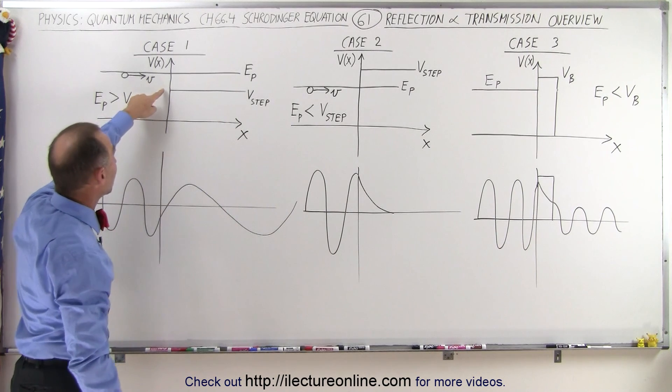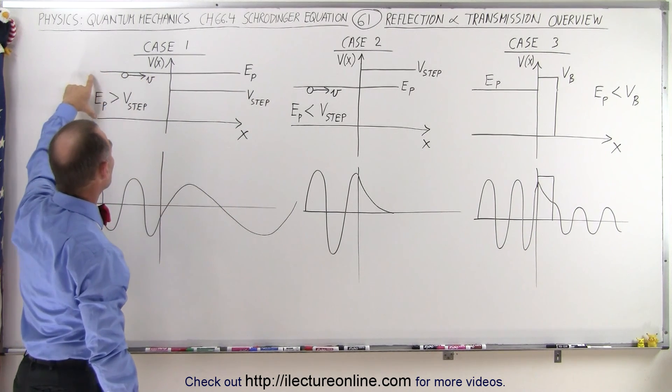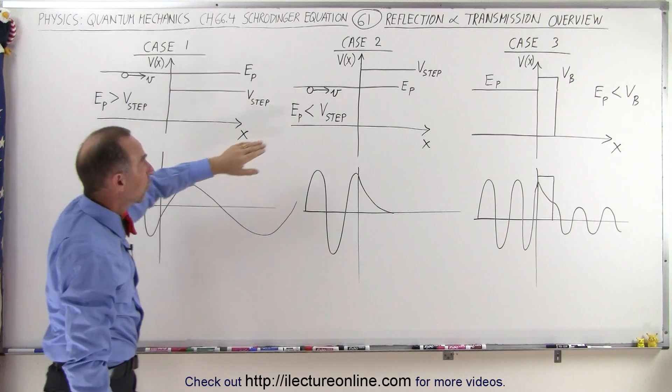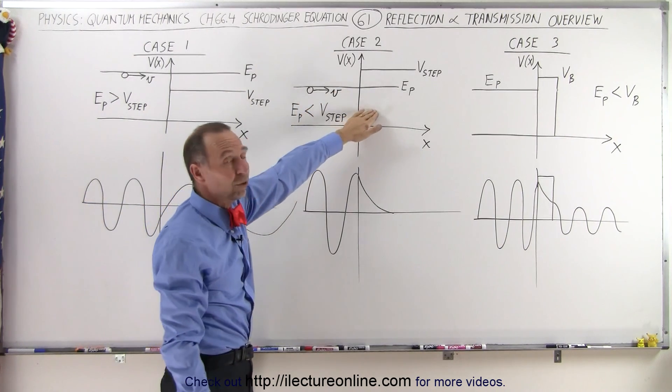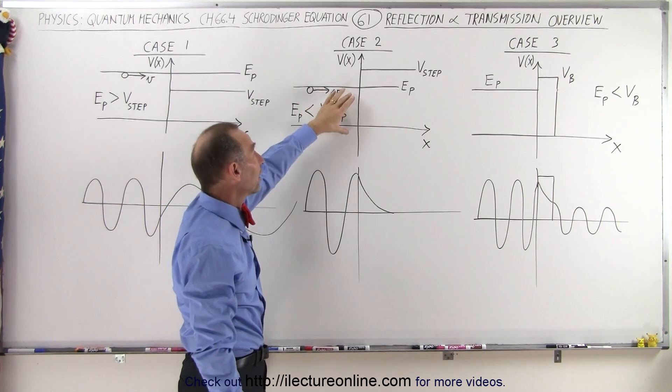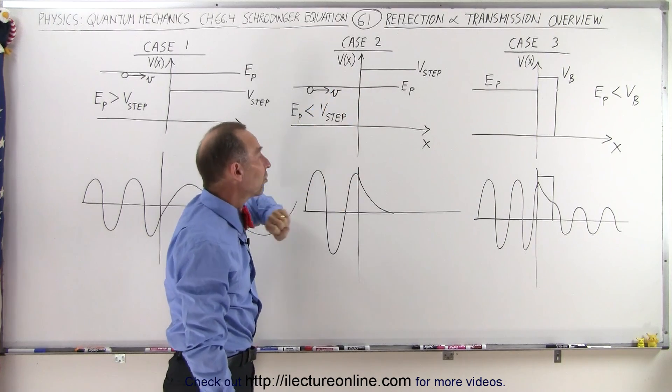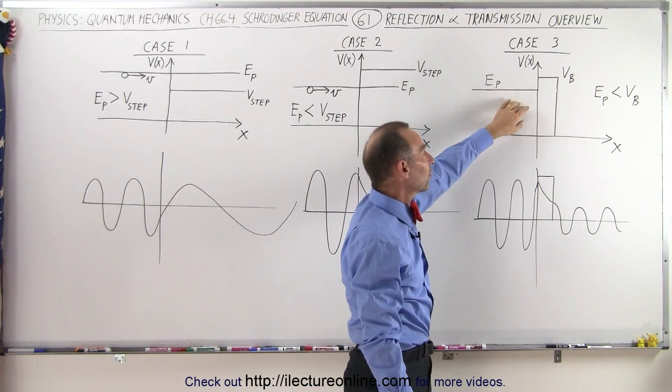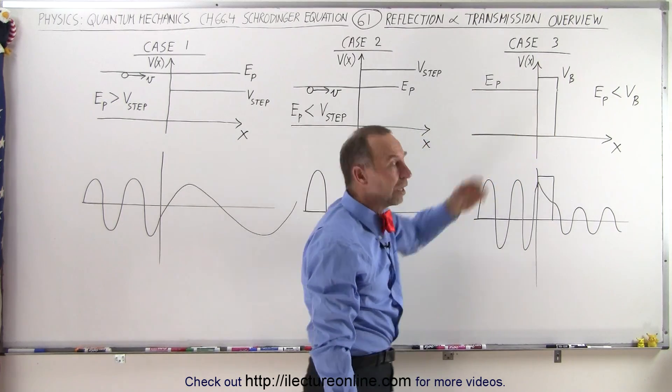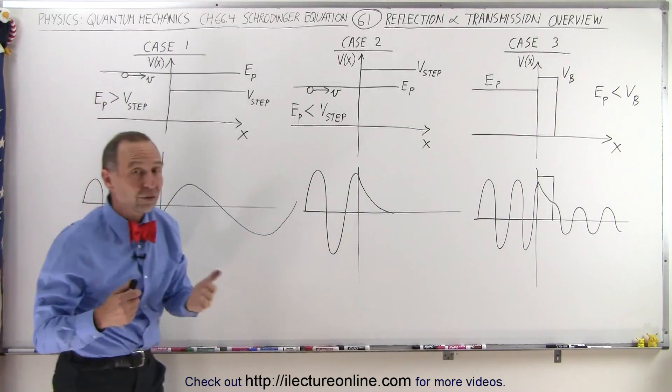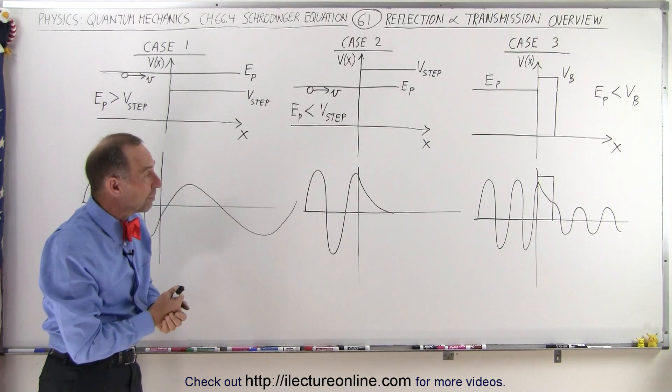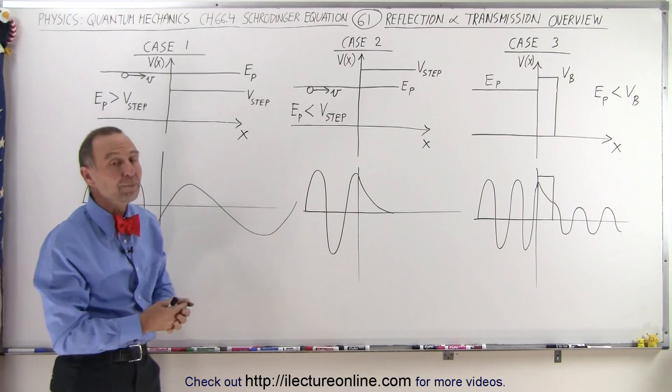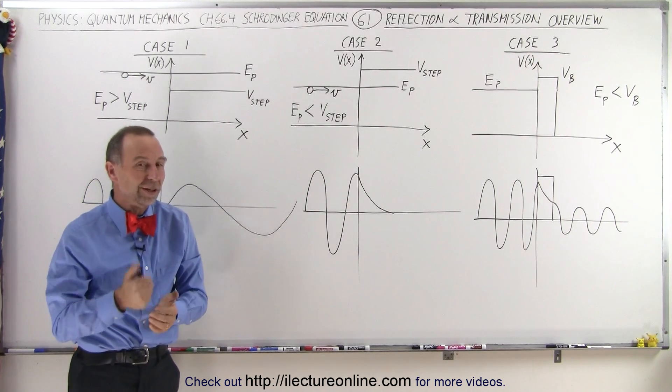Sure enough, there will be some reflection here, even though the energy of the particle is greater than the potential of the step. There will be some reflection and transmission here, even though the energy is not as large as the potential of the step. And here there will be some tunneling, and we'll figure out the transmission as well as the reflection in that case as well. So that's what's in store for us for several of the videos to come, so stay tuned if you're interested in this topic.